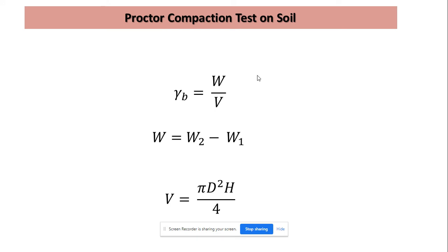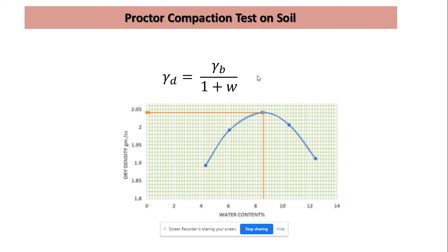We know that the bulk density of soil is total weight divided by volume. The weight can be determined from the initial weight of the mold before compaction, which was empty — that is W1 — and after compaction with soil the weight is W2. The difference of these two weights gives us the weight of the soil. We know the volume of the cylinder is πd²h/4, so we use that formula to determine the volume. From weight and volume we can determine the bulk density of soil.